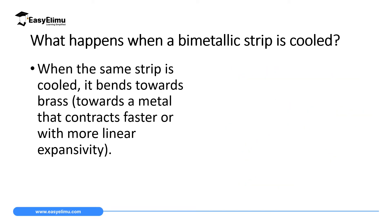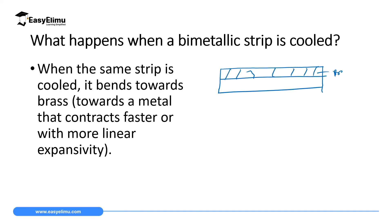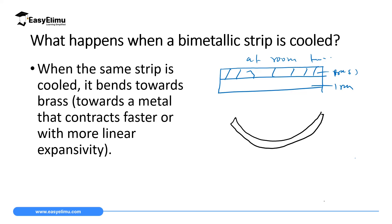When the bimetallic strip is cooled, the metal that expands more also contracts more. At room temperature the strip is straight with brass on the upper part and iron below. When cooled, brass contracts more, covering a shorter distance, while iron remains relatively larger. So now the strip bends the other way — brass is on the inner side and iron is on the outer part.